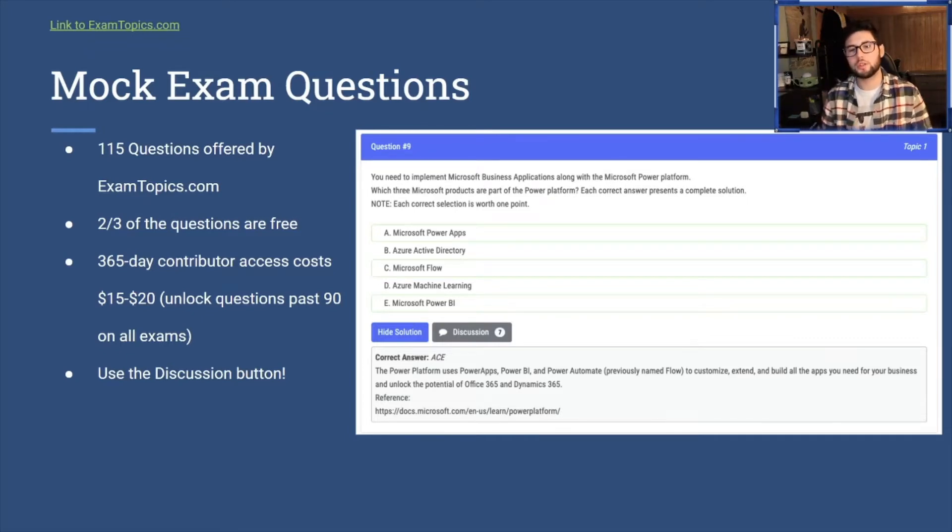So the first two thirds of the questions are free out of the 115. You could pay for the last third. It costs about 12 bucks, but you have it for a full year. If you ever need to retake the exam you'll have the questions there.